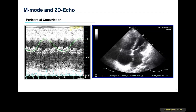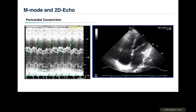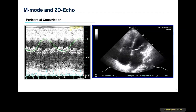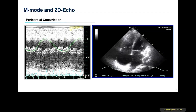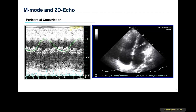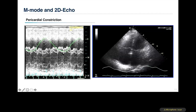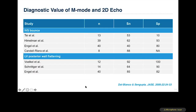One must differentiate abnormal septal motion caused by other conditions such as left bundle branch block, immediately post-pericardiectomy, chronic obstructive pulmonary disease, or atrial septal defect. Merely calling out an abnormal septal motion is not sufficient. However, looking at M-mode features of IVC bounce and LV posterior wall flattening alone has limited sensitivity and specificity, prompting a continued quest for additional variables.